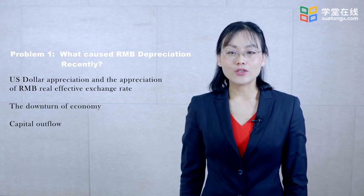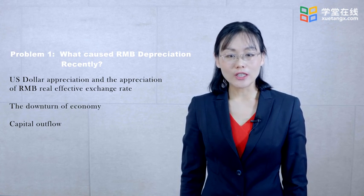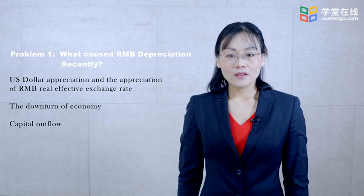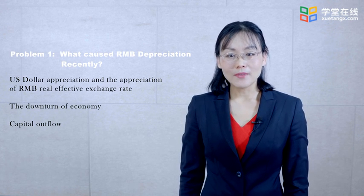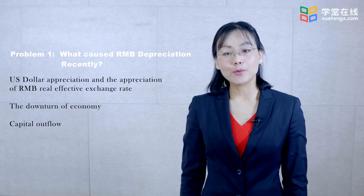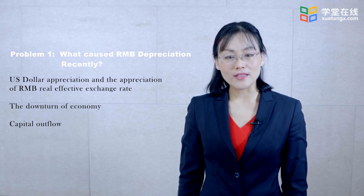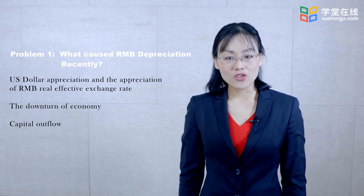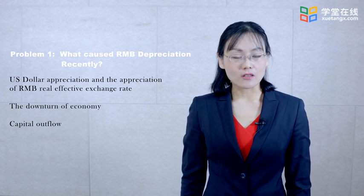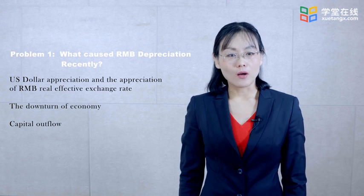Several factors led to RMB depreciation. The first is U.S. dollar appreciation in 2014, which appreciated the RMB real effective exchange rate. Market investors interpreted the reform on central parity formation as a signal to release accumulated RMB depreciation pressures. The second is economic slowdown — the slow economic transition affected economic growth. Expectation of further RMB depreciation caused capital outflows, which aggravated depreciation. Depreciation expectation and capital outflows thus formed a vicious cycle.